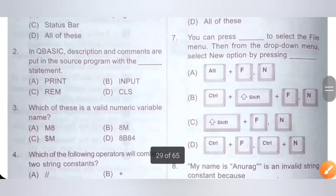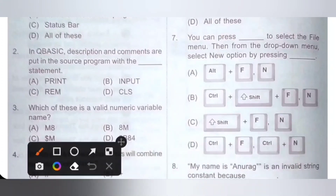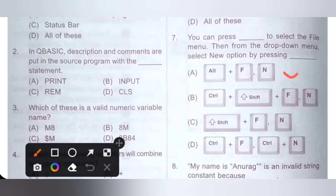Seventh question: you can press Alt+F to select the file menu, then from the drop-down menu select the new option by pressing N. Options are A) Alt+F and N, B) Ctrl+Shift+F and N, C) Shift+F and N, D) Ctrl+F and Ctrl+N. The answer is Alt+F and then N — option A is the correct answer.